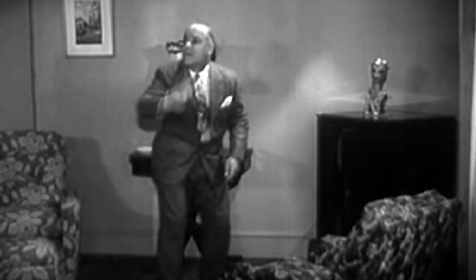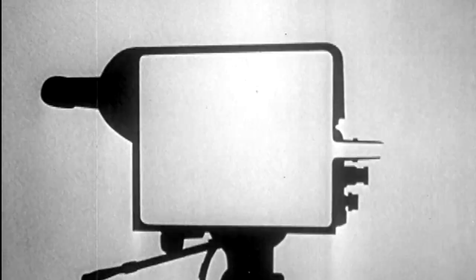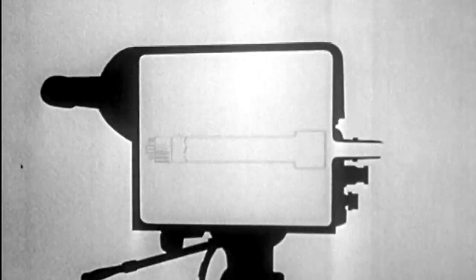In the beginning, there was black and white television. To understand how that worked, let's start with the camera. Back in the 1940s, the television camera made pictures using a camera tube.